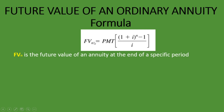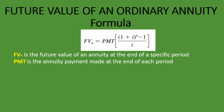With the N added, that means the future value of an annuity at the end of a specific period. And then PMT — what does PMT stand for? PMT is the annuity payment made at the end of each period. These are the payments which are made at specific periods; that is what PMT stands for.